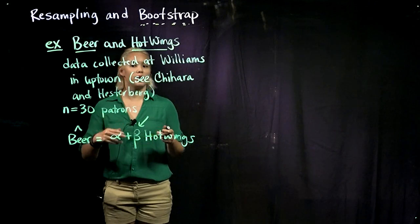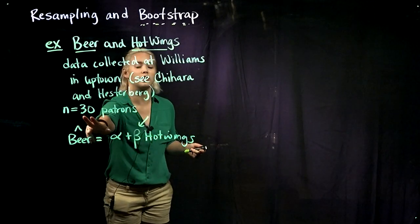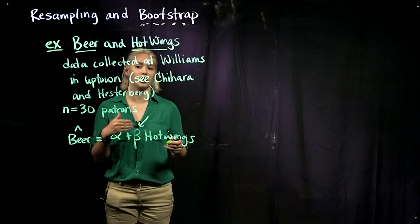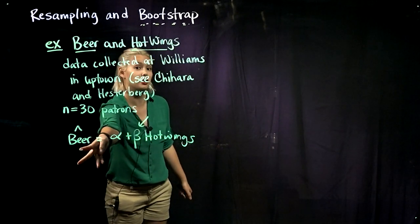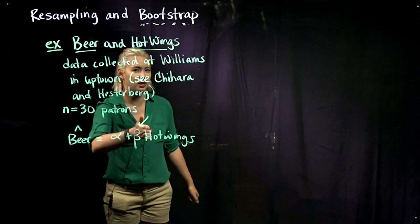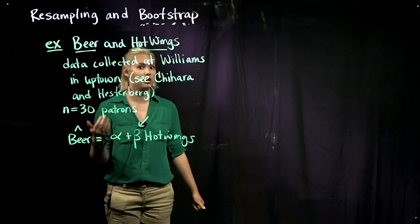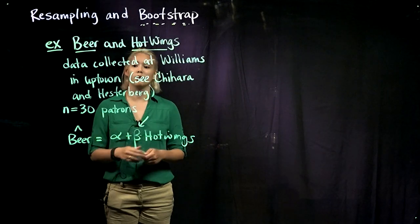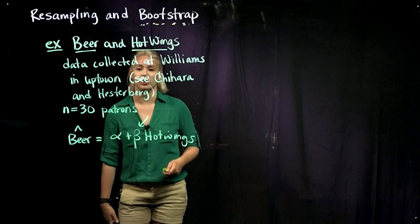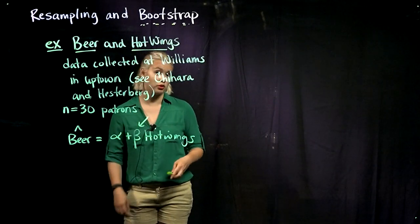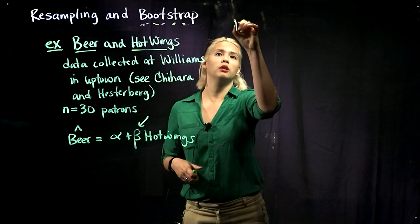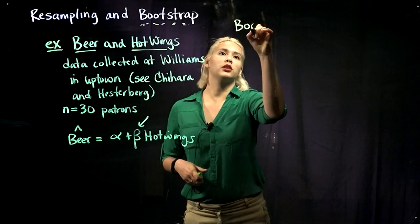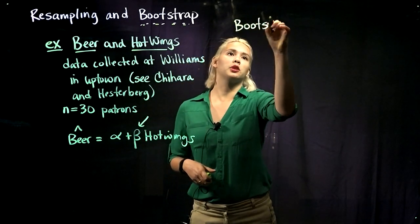If we have n equals 30 and we're probably not going to have normally distributed number of beers consumed — that's probably going to be quite skewed because it's a count — then we can do the bootstrap.